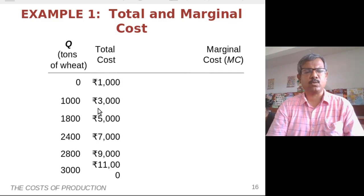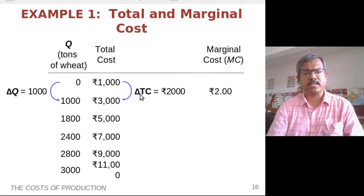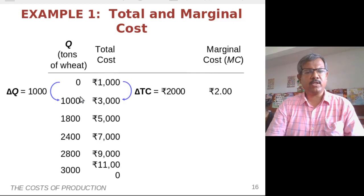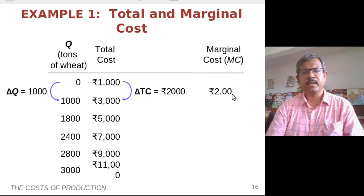Let's apply this to the data in the table. We start with two columns: quantity and total cost. Initially for the first two rows, the total cost changes from Rs. 1000 to Rs. 3000, so the change in total cost is Rs. 2000. The quantity changed from 0 to 1000, so delta Q is 1000. The ratio is Rs. 2000 divided by 1000, giving a marginal cost of Rs. 2 per ton of wheat.